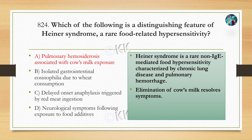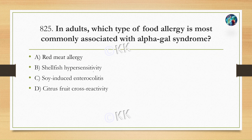यह जो Heiner's syndrome होता है, यह एक rare non-IgE-mediated food hypersensitivity disorder है, which is characterized by chronic lung disease and pulmonary hemorrhage. इसको avoid कर सकते हैं by eliminating cow's milk and certain milk products.